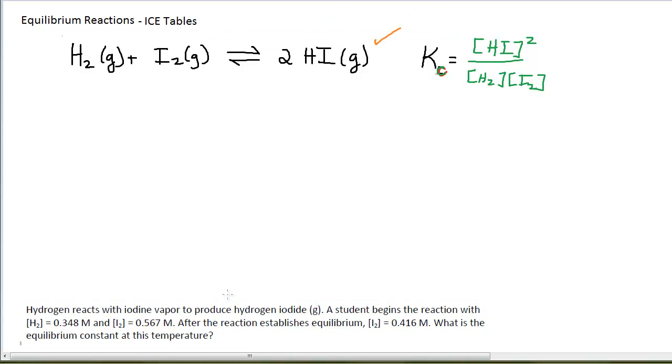Hydrogen reacts with iodine vapor to produce hydrogen iodide. We have the same reaction. A student begins the reaction with hydrogen concentration equals 0.348, iodine equals 0.567 molarity. After the reaction establishes equilibrium, the I2 concentration is this. What is the equilibrium constant at this temperature?